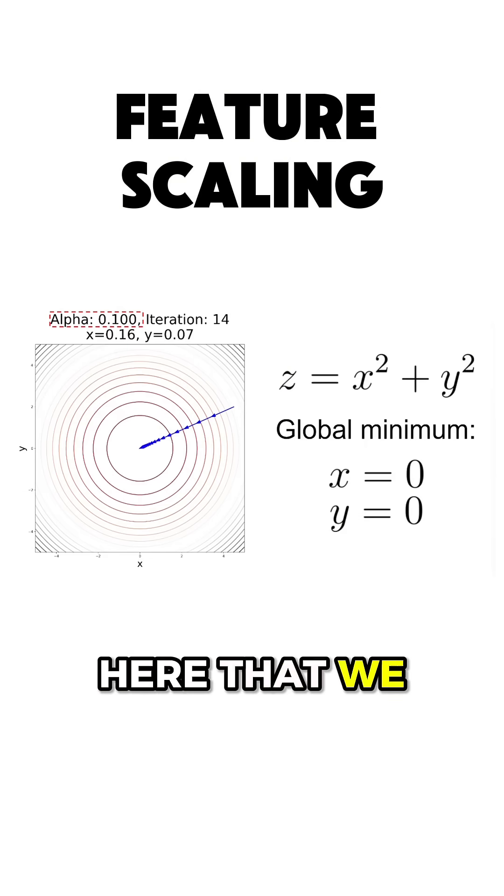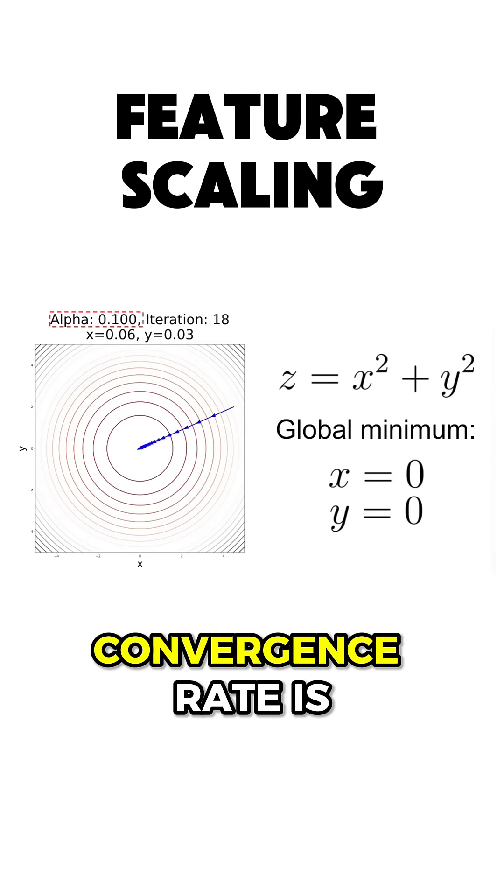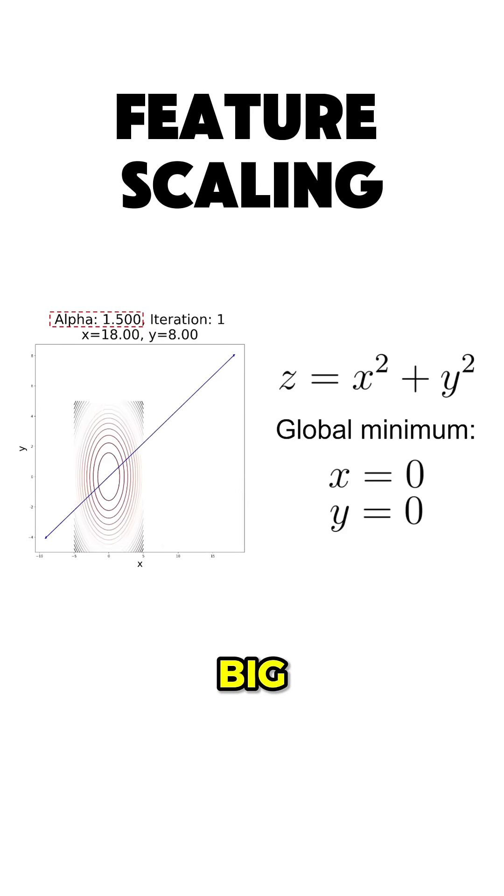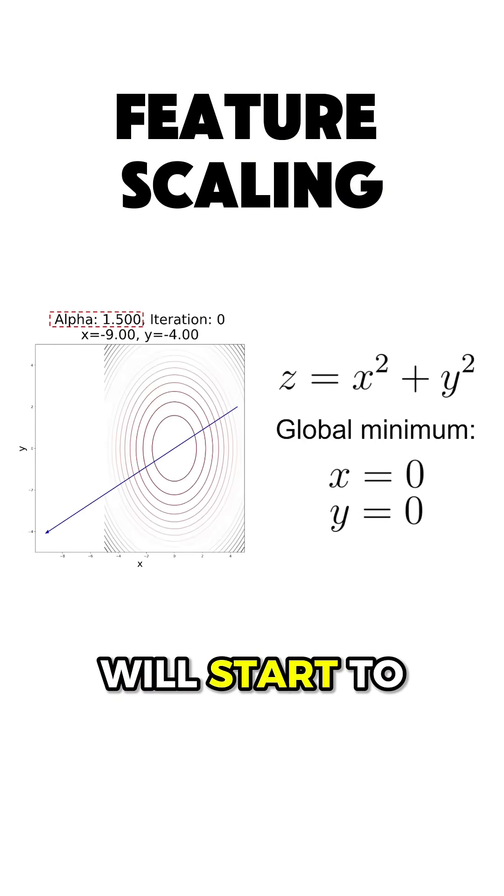One important thing here that we have to keep in mind is that the convergence rate is dependent on the learning rate alpha in this example. If we make it too small, then the gradient descent will take forever to converge. And if we make it too big, then gradient descent will start to diverge.